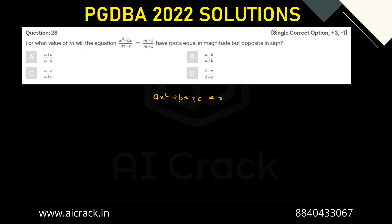So I'll do the cross multiplication. I'll be getting x² - bx(m+1) equals to (ax - c)(m-1). So I'm just worried about the coefficient of x.